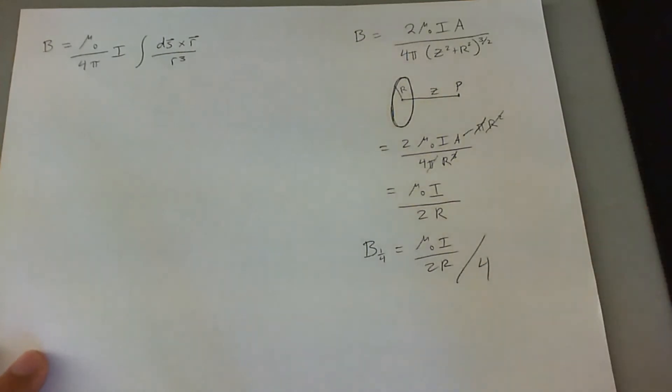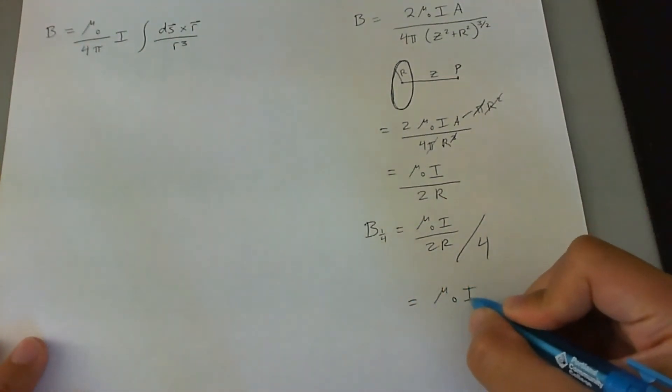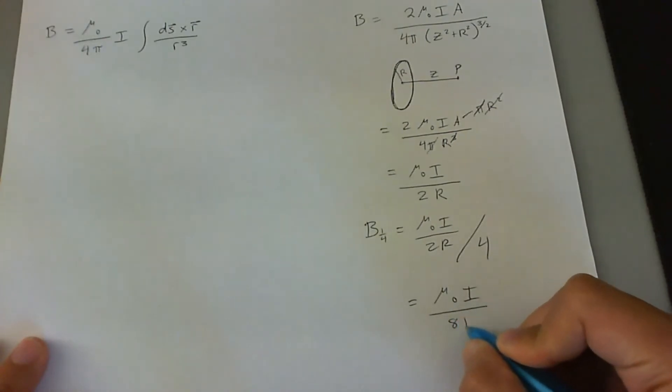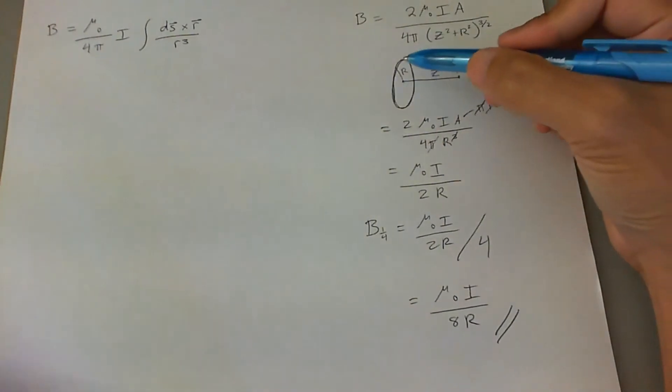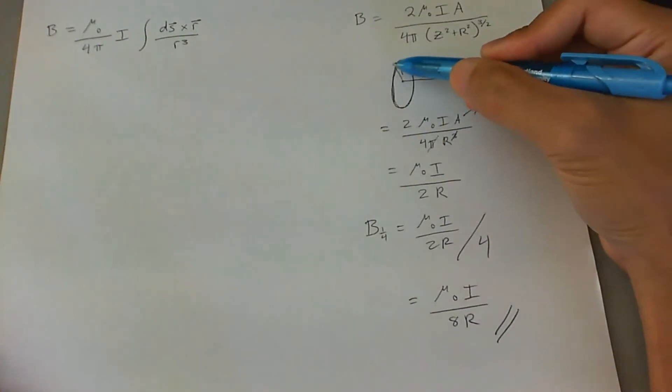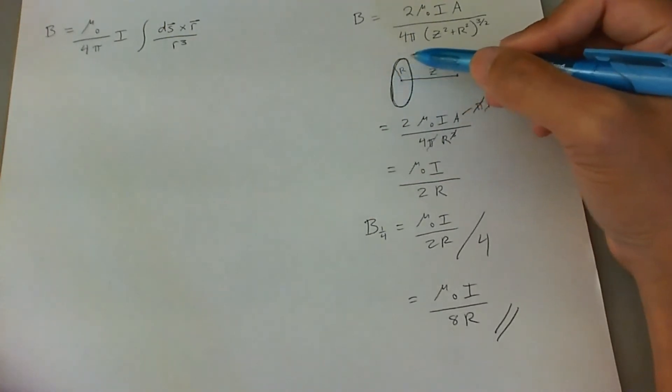That comes out to be mu naught i over eight r. This is under the assumption that all parts of the circle are creating a B field in the center of the circle equally, so that therefore if you have a fourth of a circle, you just divide this by four to get one fourth of the effect.